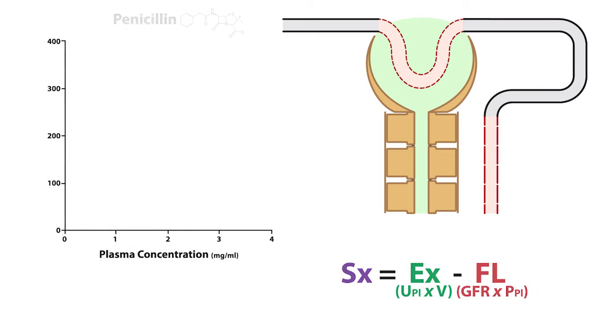Let's use the example of penicillin clearance to explain the concept of secretion rate. Penicillin is cleared by the kidneys through a combination of filtration and secretion. Let's explain using the following values.